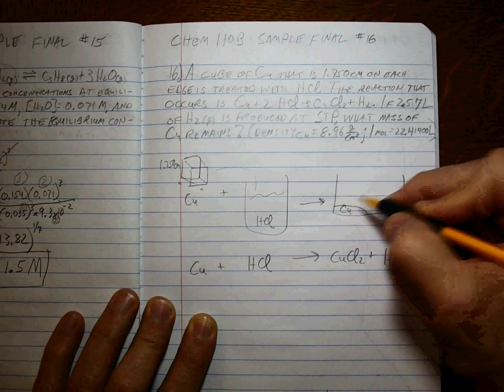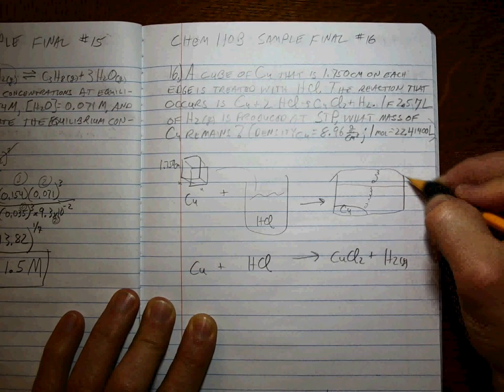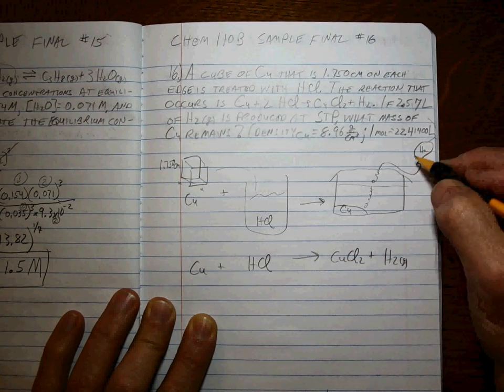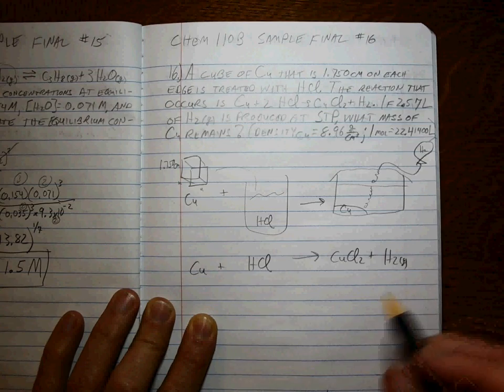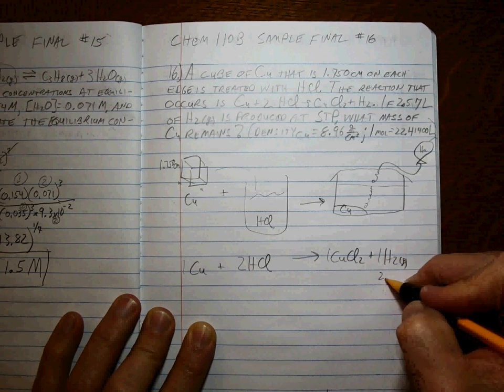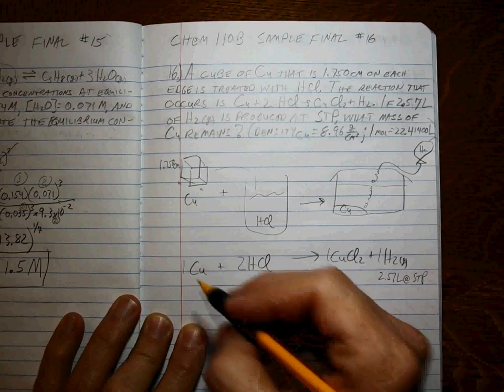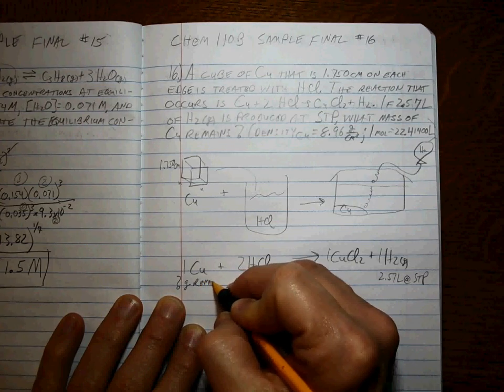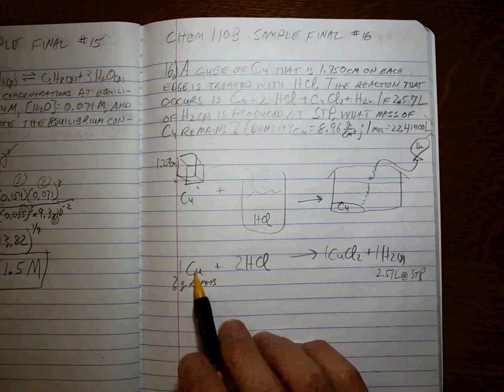The reaction that occurs is CuCl2 getting formed and H2 gas being made. The copper reacts, bubbles of H2 gas are collected. So that's the reaction. Now it's balanced. If 2.57 liters of the gas are made at STP, what mass of the copper remains?